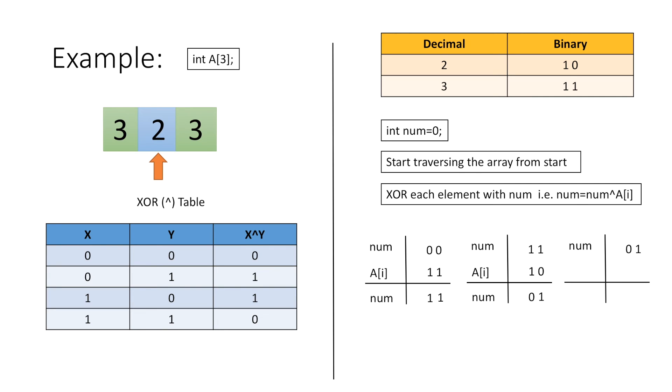Next we again take our variable num and we move on to the next element in our array which is 3, and we again perform the XOR operation starting from the right.